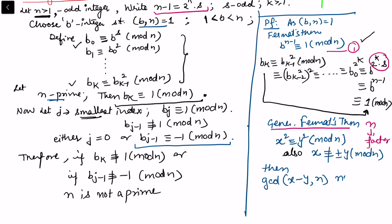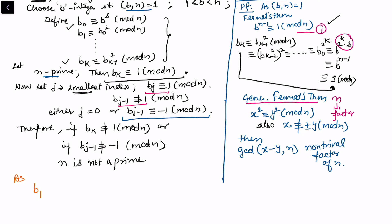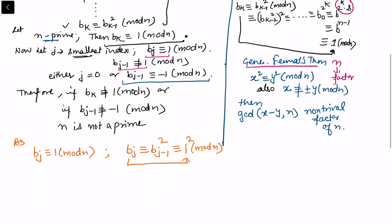When GCD(x - y, n) gives a non-trivial factor — meaning it is neither 1 nor n — then n is composite. Applying this to our sequence: since bⱼ ≡ bⱼ₋₁² ≡ 1 mod n, and 1 = 1², treating bⱼ₋₁ as x and 1 as y, we get that bⱼ₋₁² ≡ 1² mod n. If n is prime, we can rewrite this as (bⱼ₋₁ - 1)(bⱼ₋₁ + 1) ≡ 0 mod n.